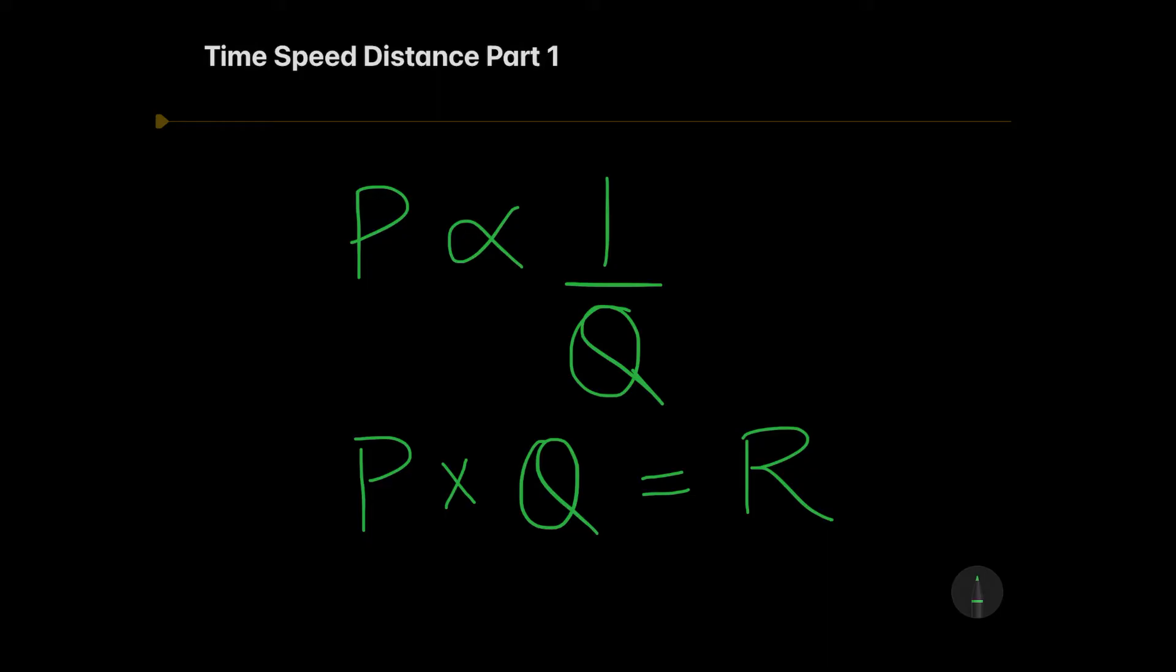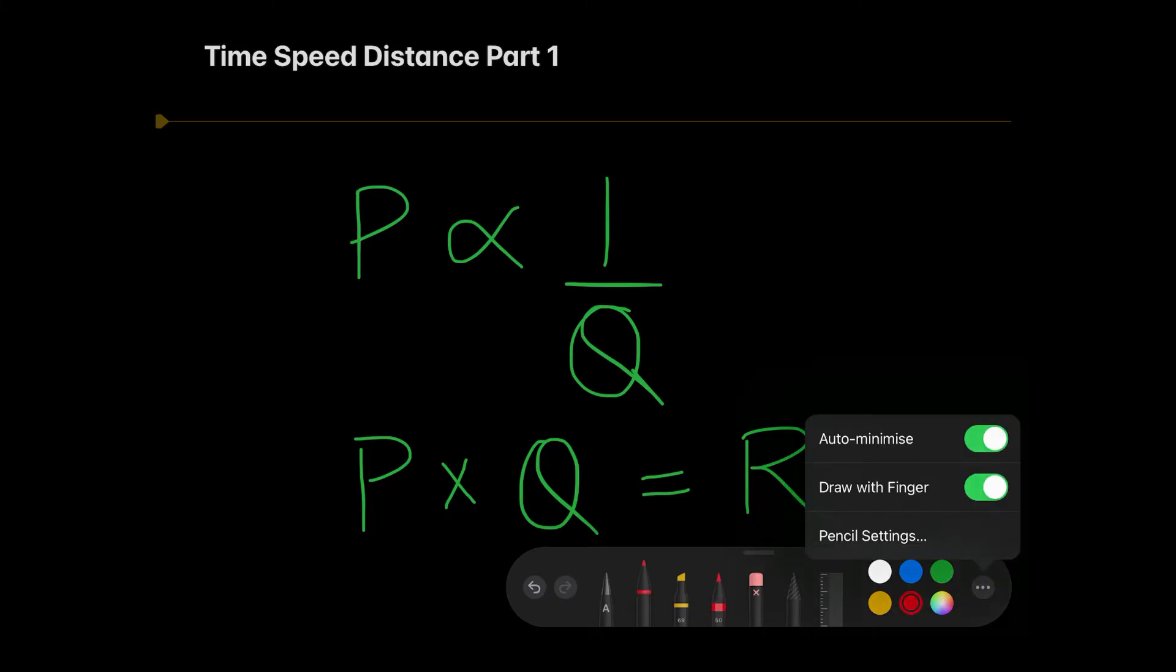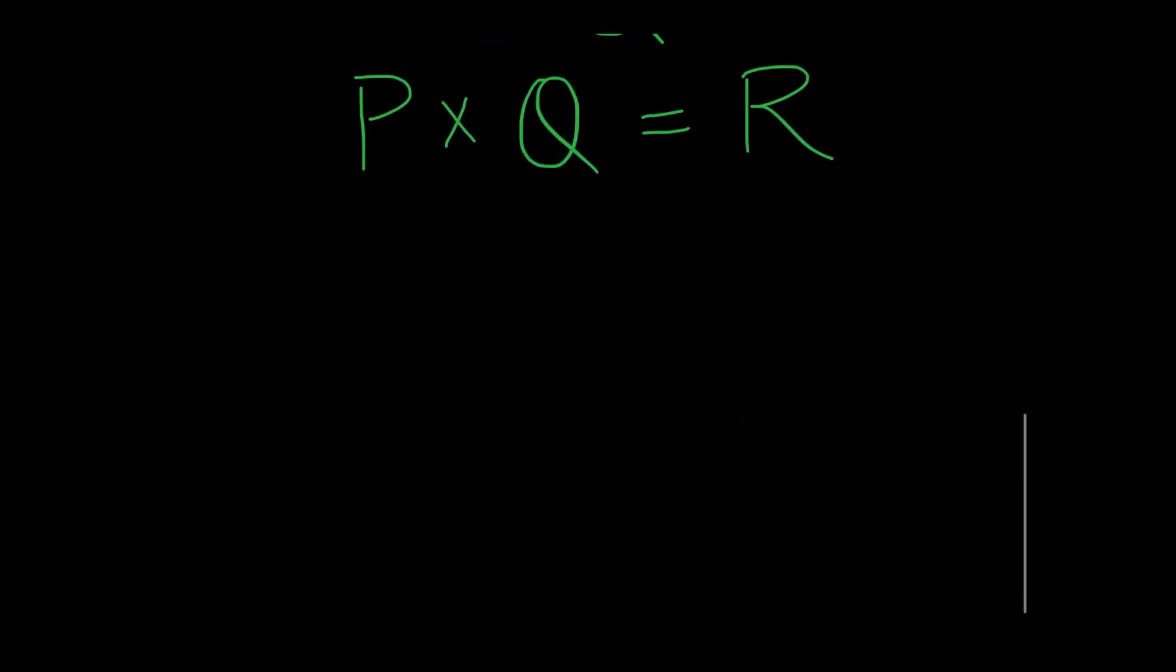The chapter time speed distance is nothing but the complete application of this concept where the product of two numbers equals another number. Here, these three things can be classified the same way. If I keep my distance the same, this product can be my distance, one of them can be my speed, and the other can be my time taken. Speed multiplied with time equals distance.